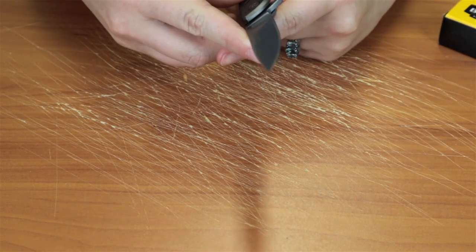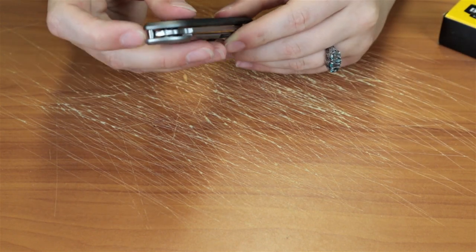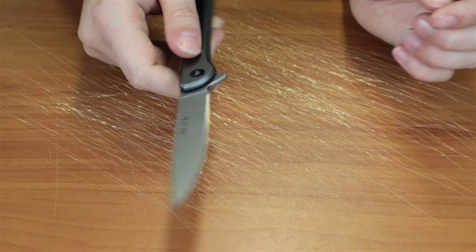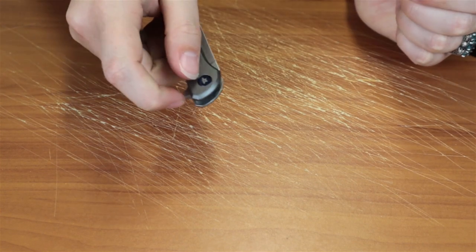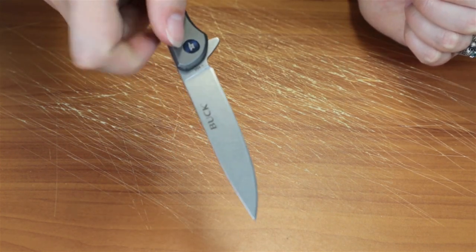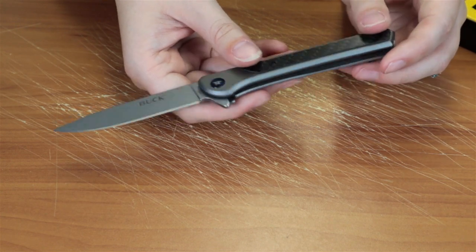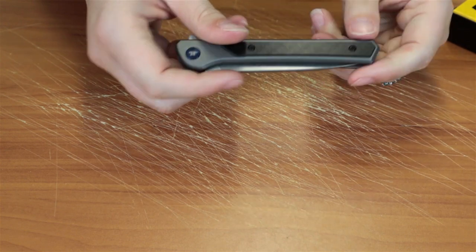It's got a frame lock obviously. And the blade is deployed with a flipper stud on the back which there's no jimping. But it's large enough that you don't really need it. So I'll show you it again. Opens very easily, very quickly. No complaints in there and it gauges. I've been messing with it. It doesn't fail and gauge once.